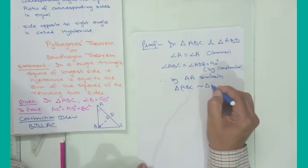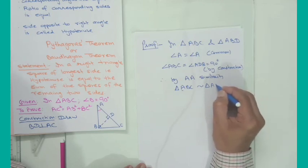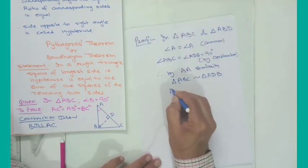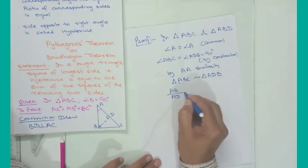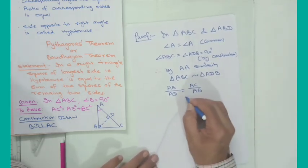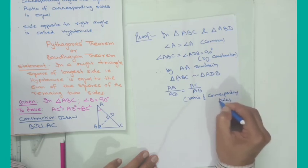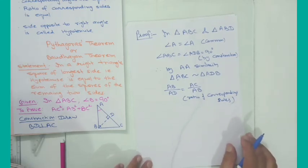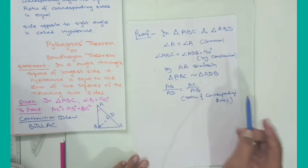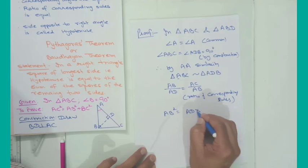Triangle ABC is similar to triangle ABD — written with A corresponding to A, and B corresponding to D, since both are 90 degrees. Taking the ratio of corresponding sides, we get AB/AD = AC/AB. From this we get AB² = AD × AC. Let this be equation 1.